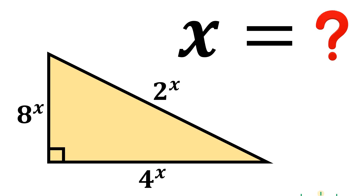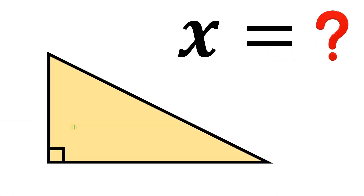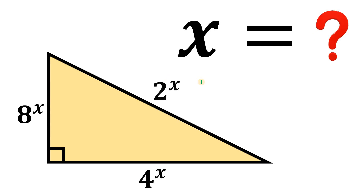Is it possible to find the value of x given this condition? Given a right triangle with side lengths 8 raised to the power of x, 4 raised to the power of x, and the hypotenuse 2 raised to the power of x, the goal is to find the value of x that satisfies this condition.